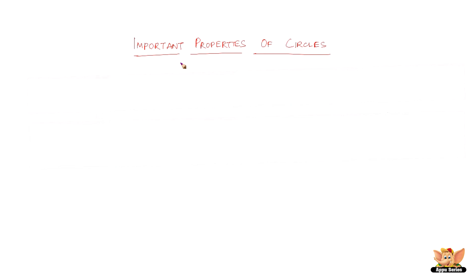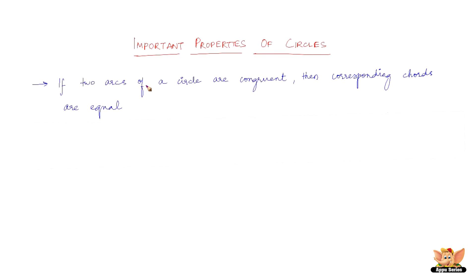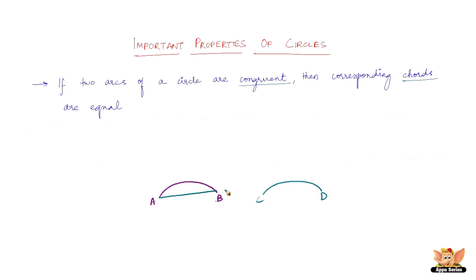In this video, let us look into some important properties of circles. The first property states that if two arcs of a circle are congruent, then the corresponding chords are equal. Consider two arcs: arc AB and arc CD. If these two arcs are congruent to each other, then the corresponding chords are equal — chord AB would equal chord CD if arc AB and arc CD are congruent to each other.